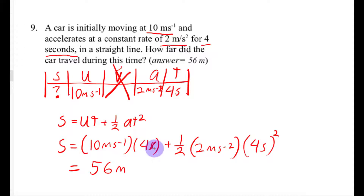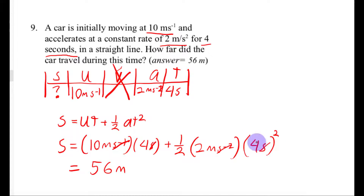When you plug that all into your calculator you get 56 meters. Notice the seconds cancel out here — seconds squared cancel with the squared time term — and you're left with an answer in meters. That's how you do number 9.